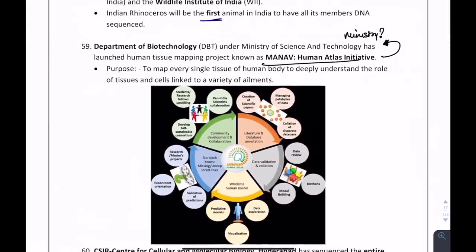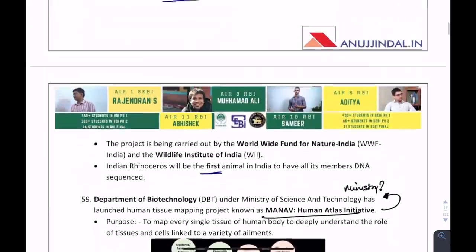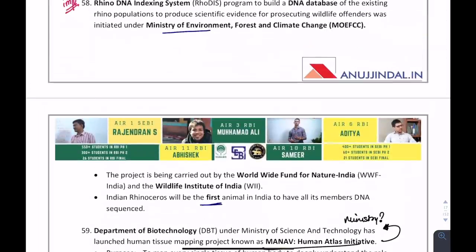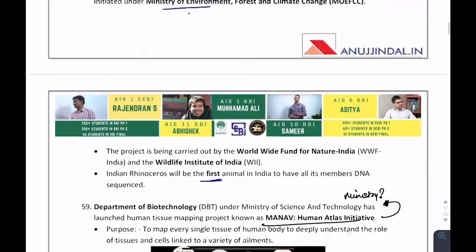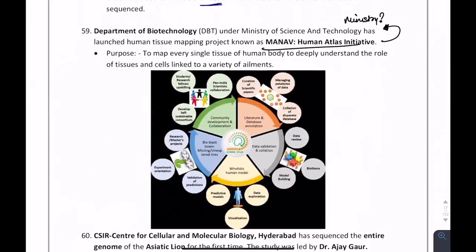They can ask about the ministry under which the MANAB Human Atlas Initiative was taken up to map every single tissue of the human body. The answer is the Ministry of Science and Technology. For rhino DNA indexing, it is Ministry of Environment, Forest and Climate Change; for MANAB Human Atlas, it is Ministry of Science and Technology.